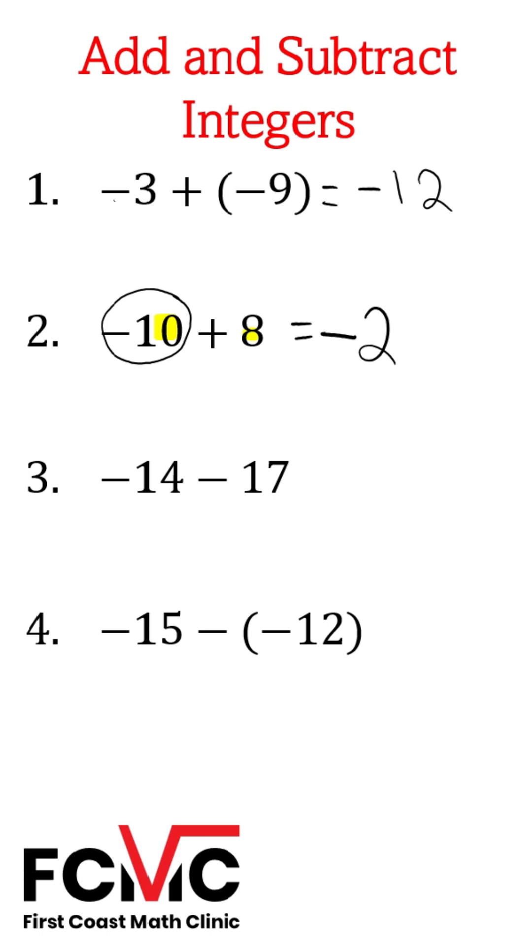3 and 4, we're subtracting. We want to use our subtraction rule to write these as addition problems. For number 3, using our subtraction rule, we're going to keep the negative 14, keep the first term. We're going to change subtraction to addition, and take the opposite of the second term. So that positive 17 becomes negative 17. This is the same setup as number 1. We're adding two numbers of the same sign, so we can keep the sign and get negative 31.